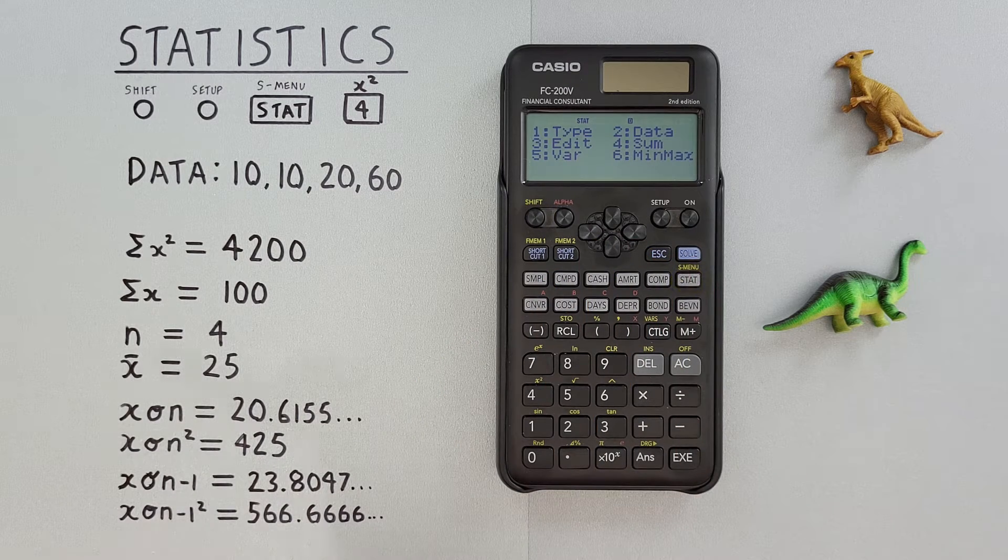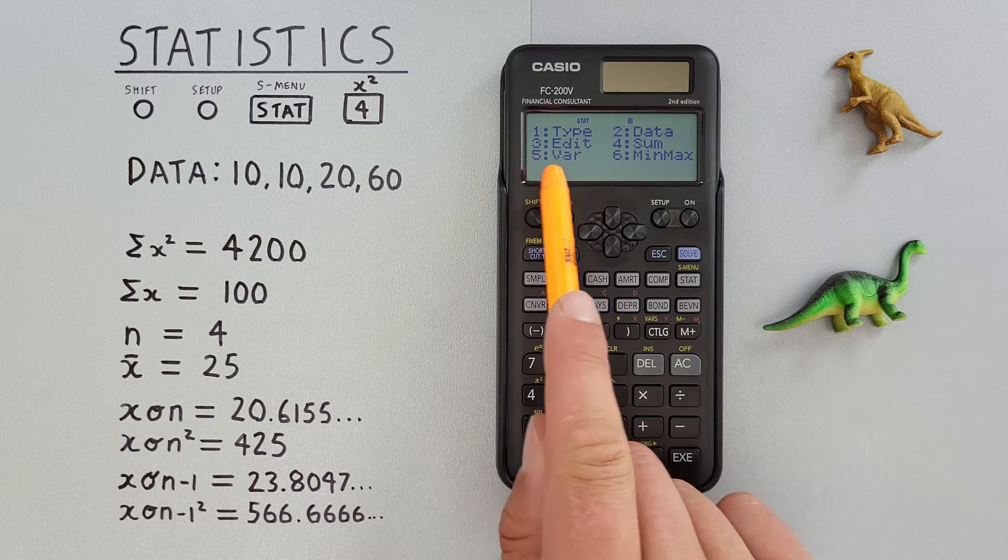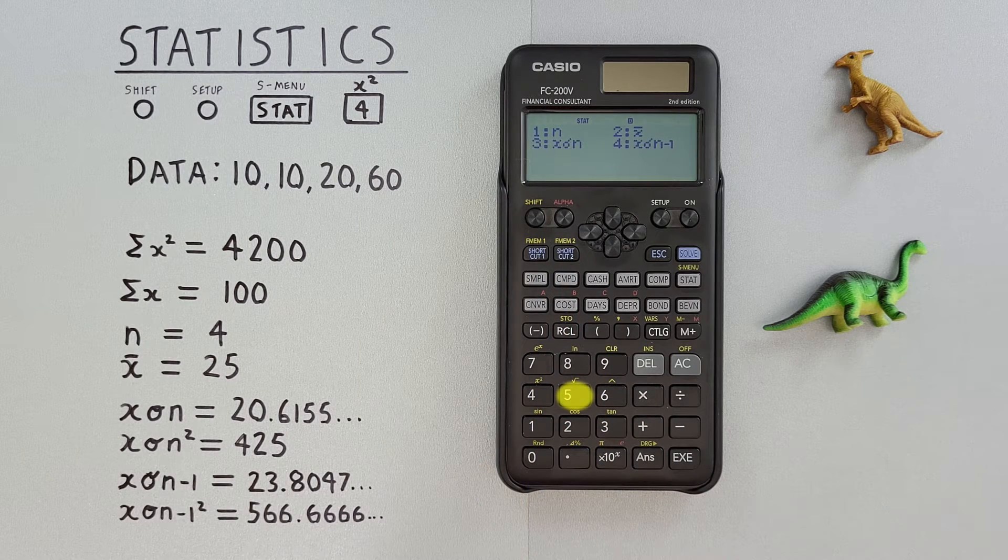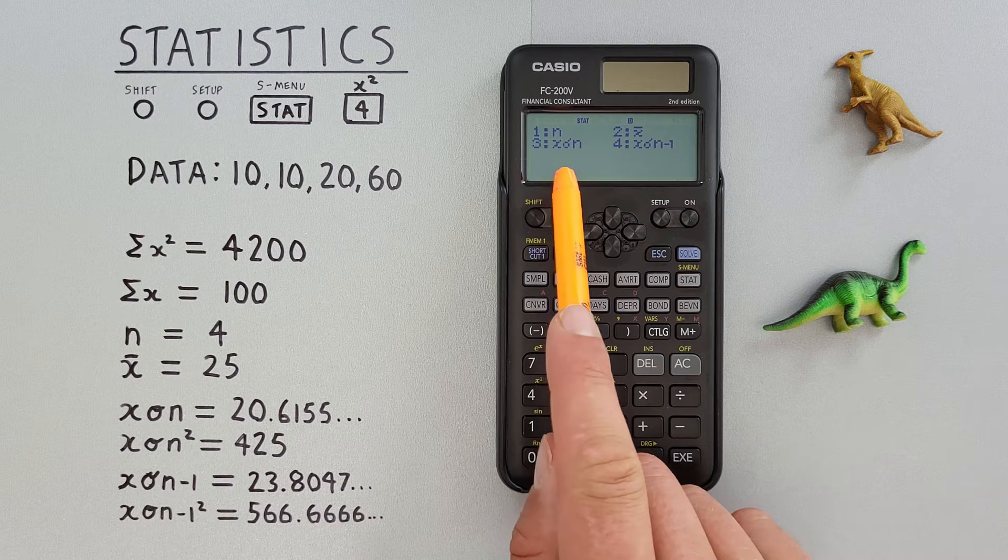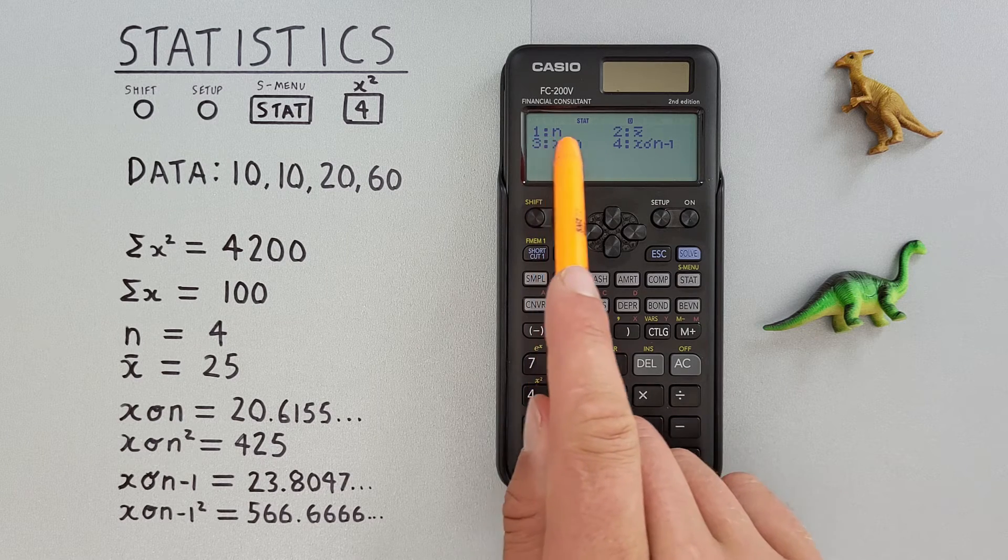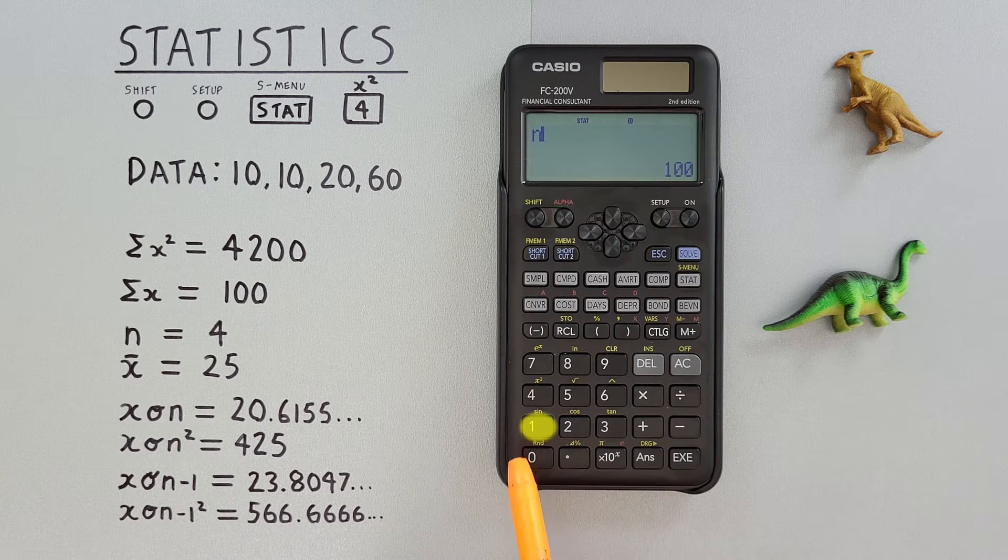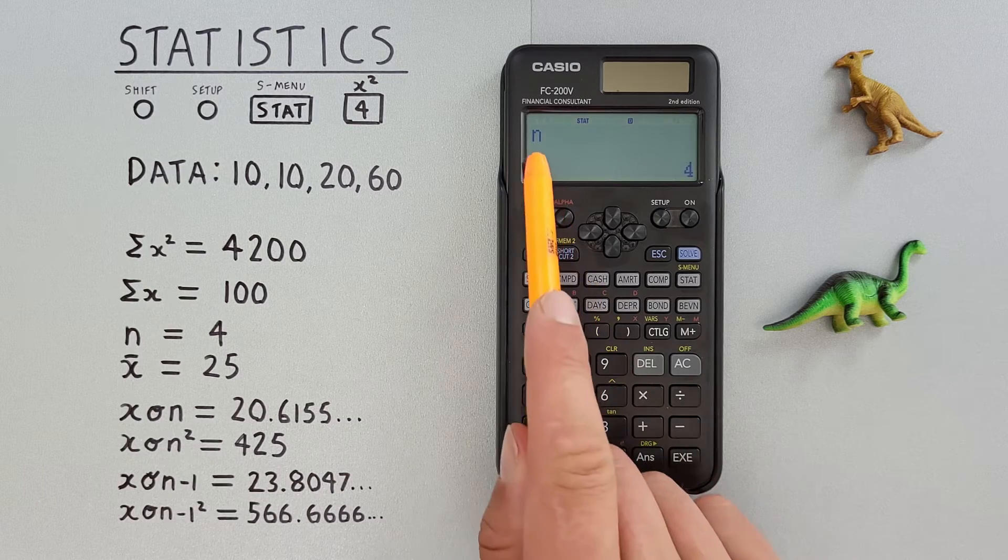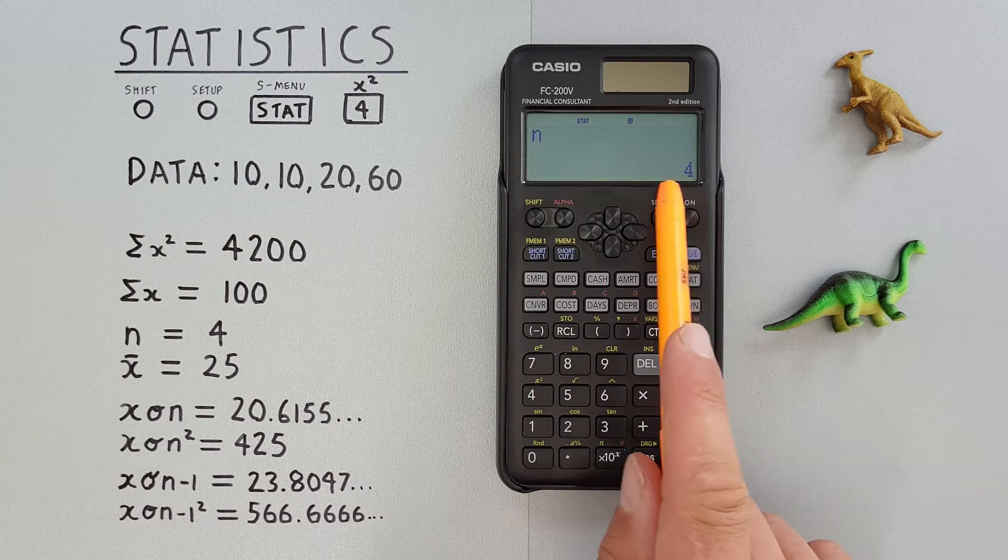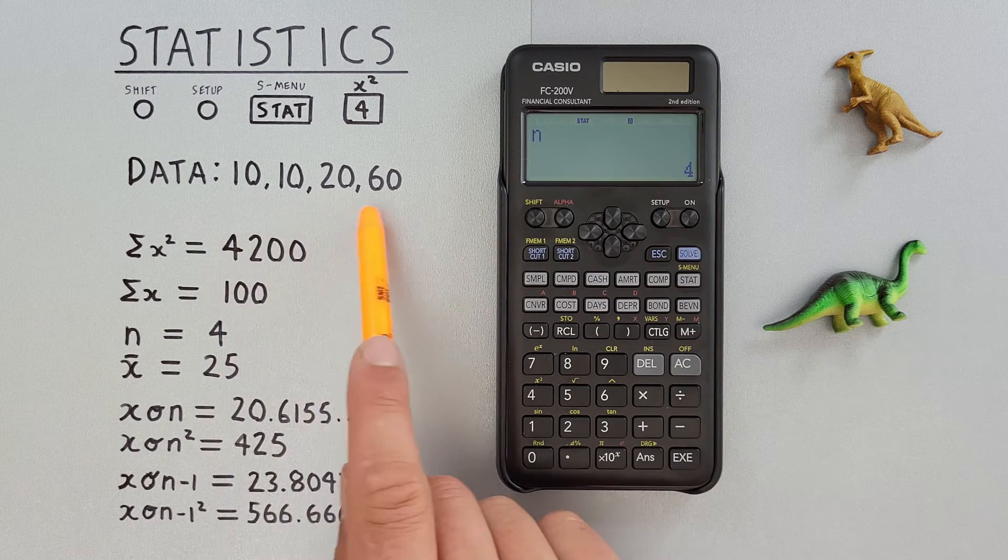Next, we can look at number five, var or variables, which gives us this menu here. So we can choose number one, n, which is the number of variables in our dataset, and gives us four, which is correct.